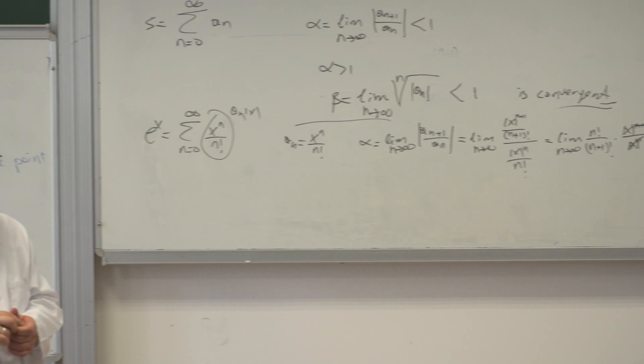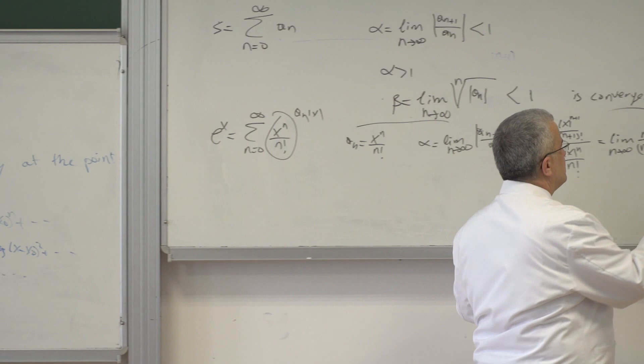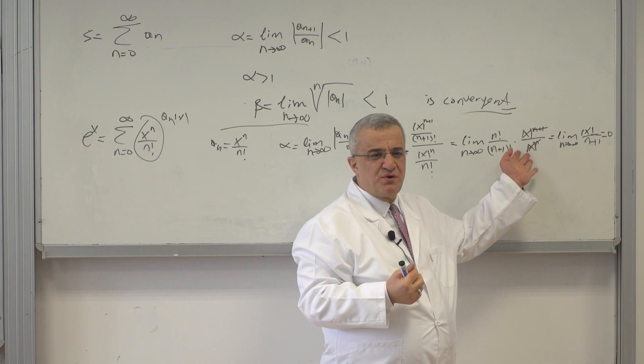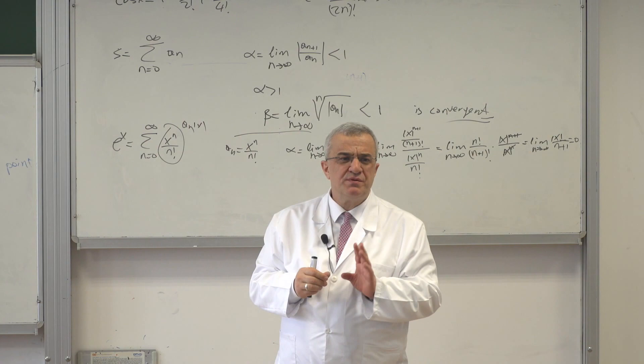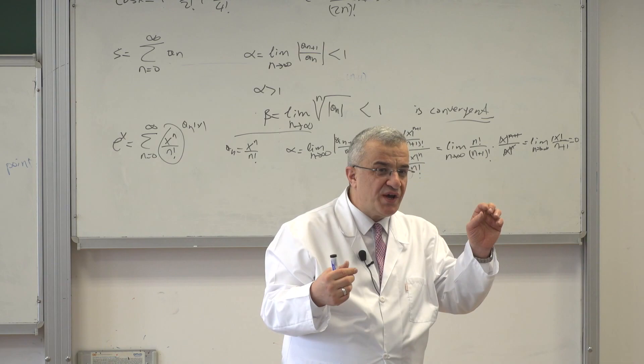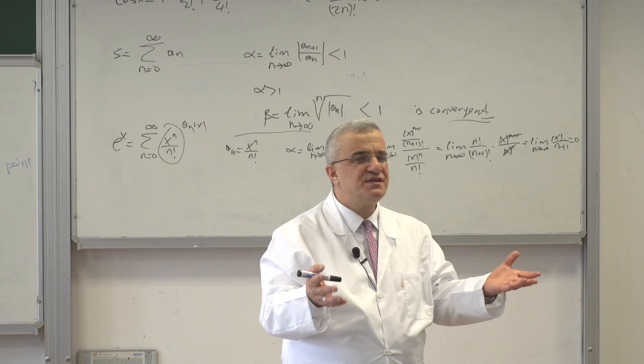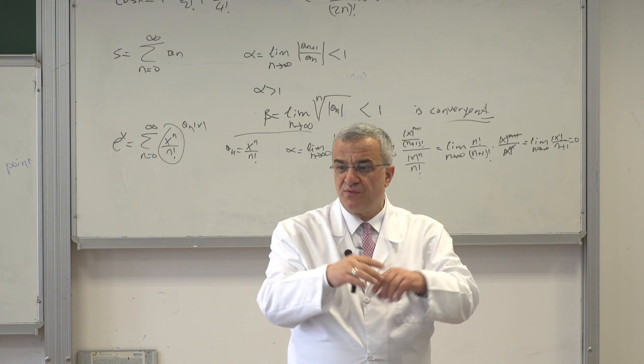So for what values of x is this convergent? For all finite x — for all x less than infinity, this series is absolutely convergent. And this is why I told you about this. Now this is for real values of x. But I found out that this series is convergent for all x and absolutely convergent.